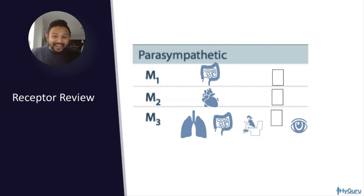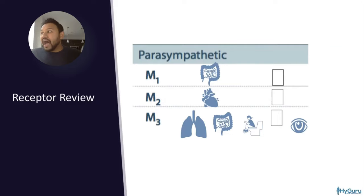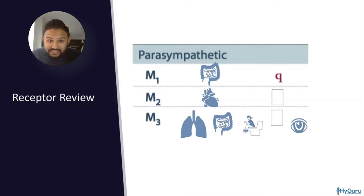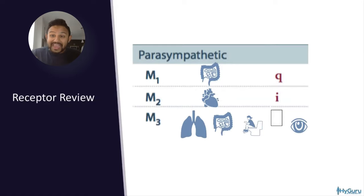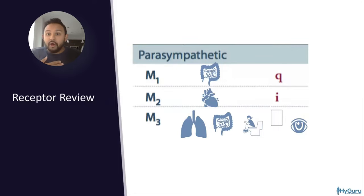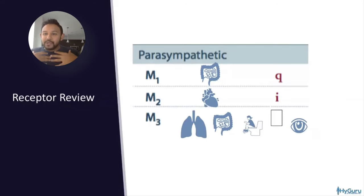M1 stimulates the enteric nervous system. M2 is found in the heart and is Gi related — that's why acetylcholine hitting the heart causes bradycardia. The specific receptor is M2, very high yield. Here's a memory trick: most of you are M2s right now, stressed about this exam, getting palpitations because you're nervous — M2 receptors are at the heart, M2 Gi, very important. M3 is found in the lungs — remember beta-2 was also in the lungs.